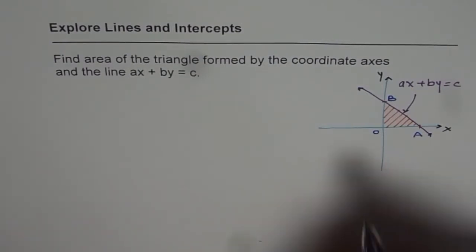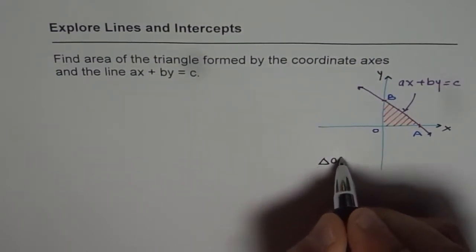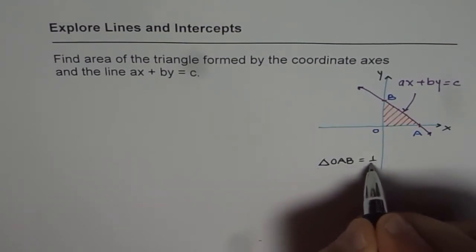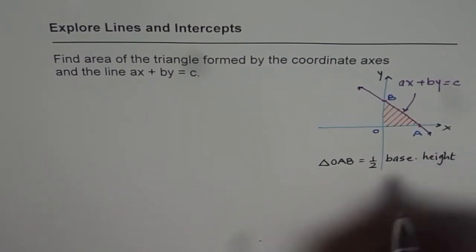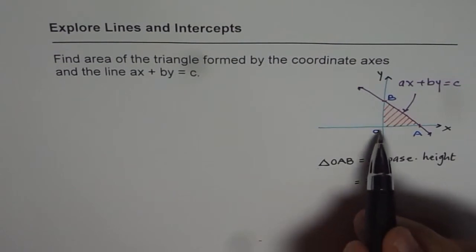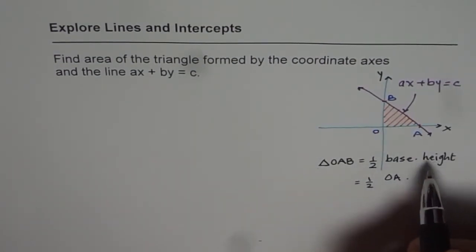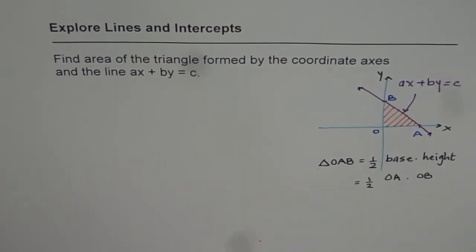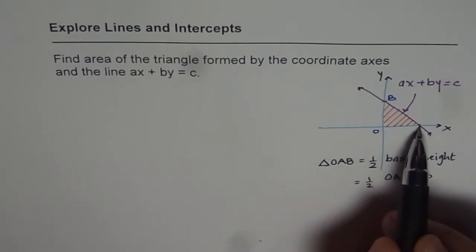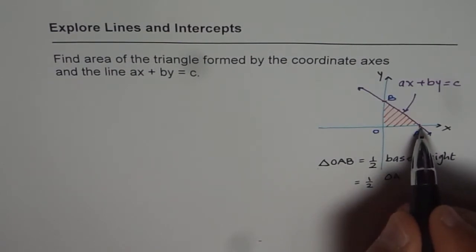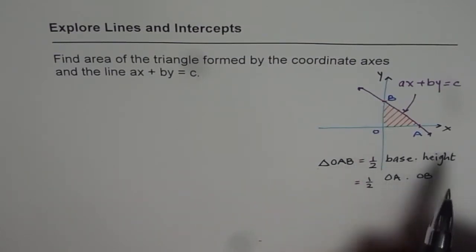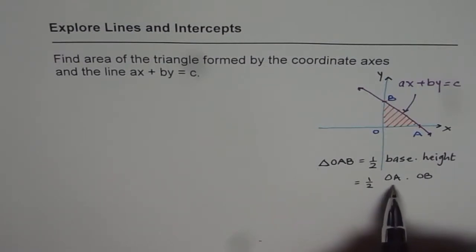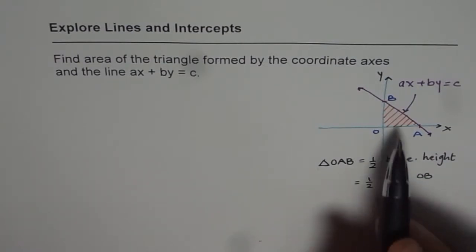The area of triangle OAB equals half times base times height. In the given situation, the base is OA and the height is OB. OA is actually the x-intercept and OB is the y-intercept. So the x-intercept gives us the length of OA and the y-intercept gives us the length of OB. If we can find the x and y-intercepts, we can find the area of this triangle.